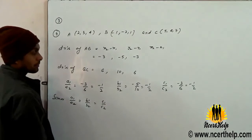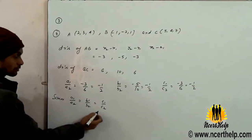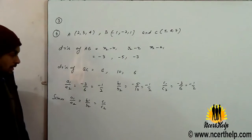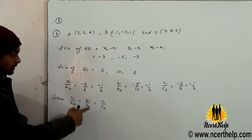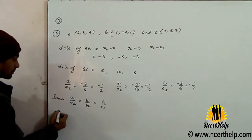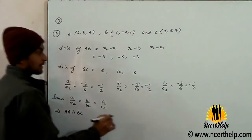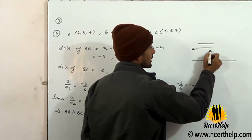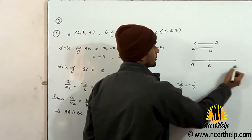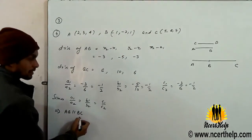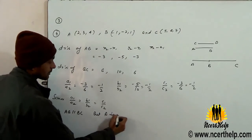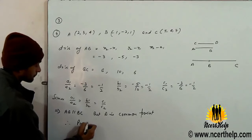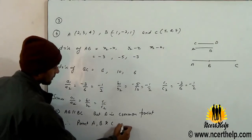A1 upon A2 equals B1 upon B2 equals C1 upon C2, all equal to minus 1 by 2. Therefore AB is parallel to BC, but B is a common point, therefore points A, B, and C are collinear.